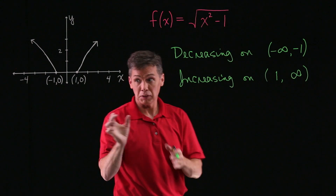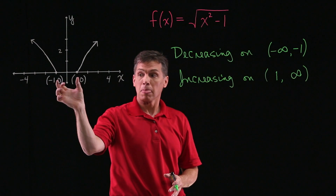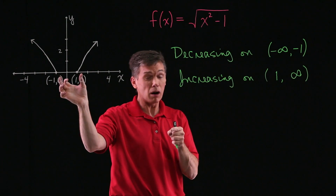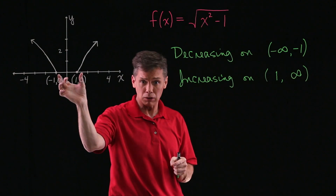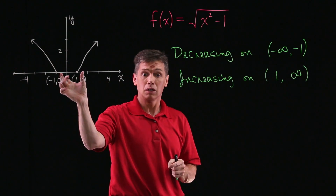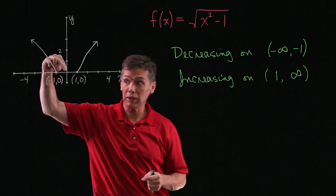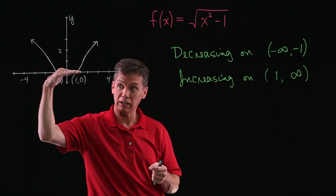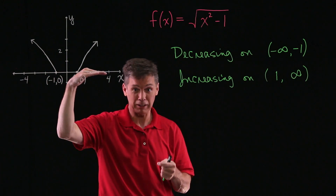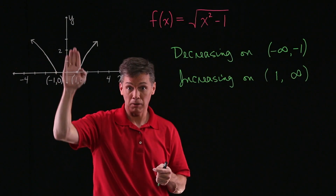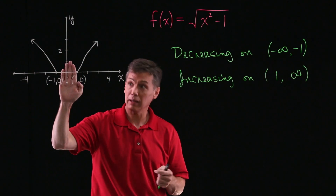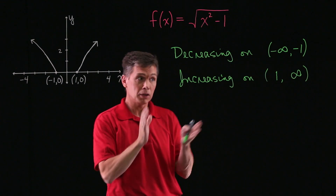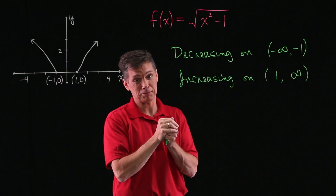Now for this particular function, there was a gap — be careful. If our choices were increasing, decreasing, or constant, don't conclude constant here. Constant would mean you're doing that walk from left to right and there actually is graph that just stays flat — a flat line. There is no graph here at all. This just means the function is undefined between negative 1 and 1. So that's my whole answer.